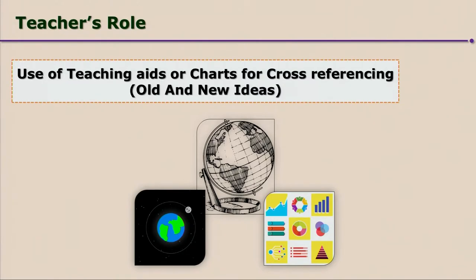One more method of making concepts clear is to use teaching aids for cross-referring old and new ideas. For example, students might have already learnt about eclipses and the solar system, and you are teaching them about certain current phenomena, maybe meteorites or asteroids. Then we may have to refer back to what they have learnt, and it would be easier for them to recollect if you bring in concrete pictures, teaching aids or movies, and then make reference to that and explain more in detail, enabling them to connect present knowledge to what they have already learnt.